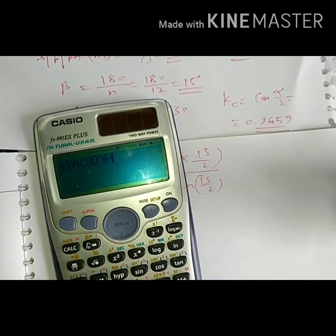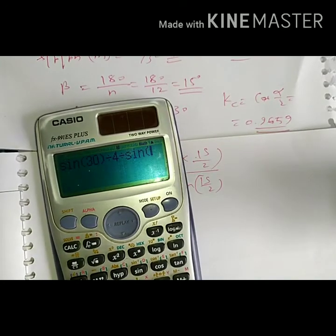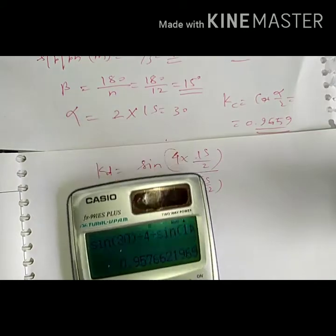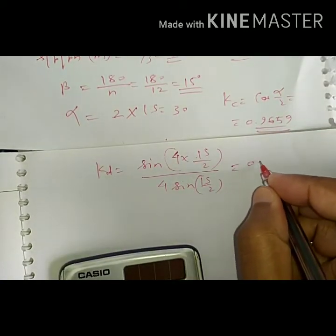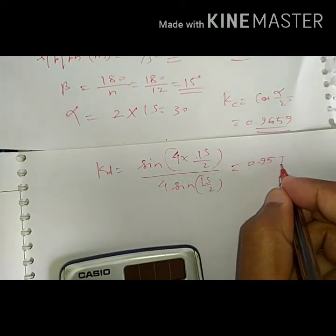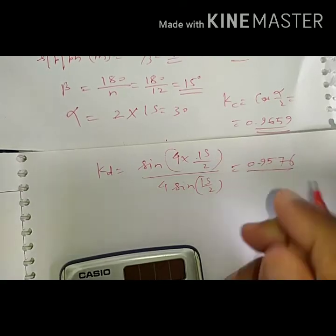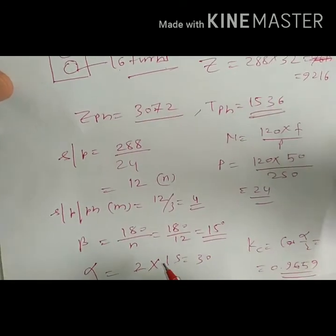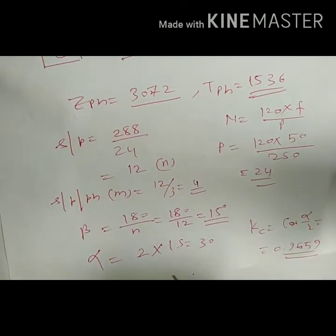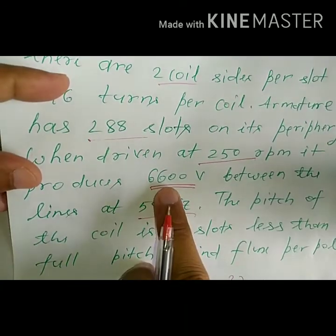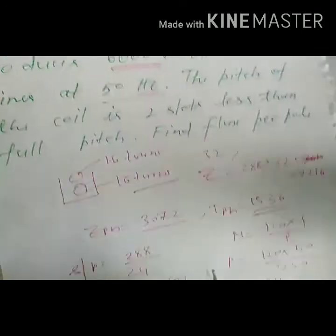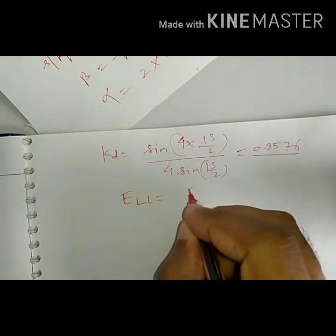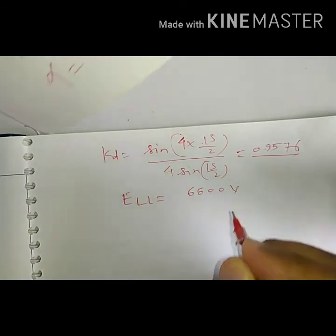Kd = sine(30) divided by 4 × sine(7.5 degrees), which comes as 0.9576. So we have Kc, Kd, and T_ph. Now we can calculate flux per pole. Line voltage is 6600 volts.